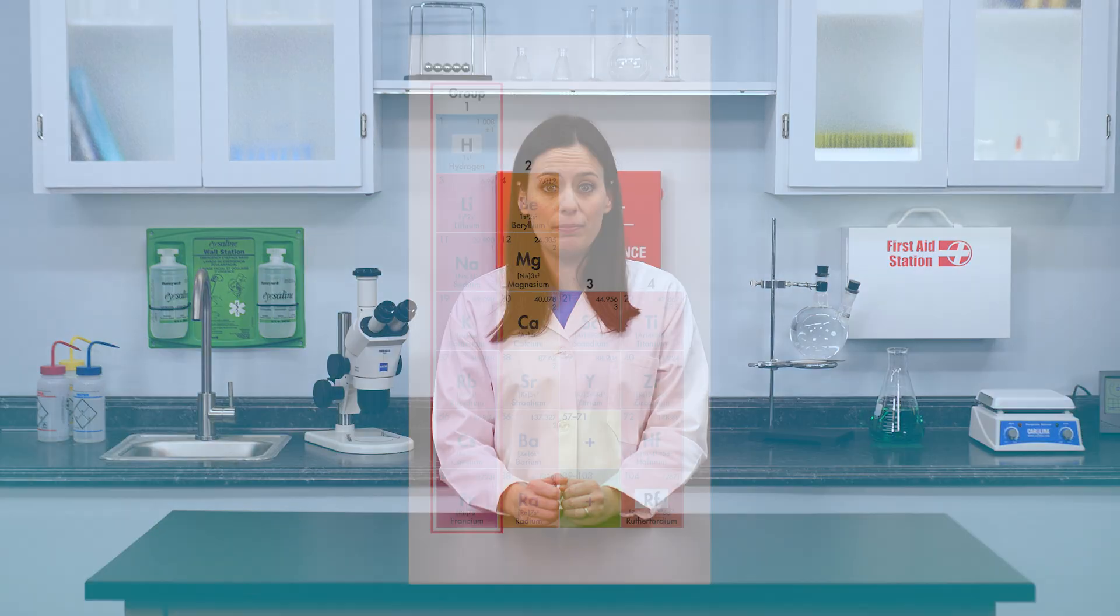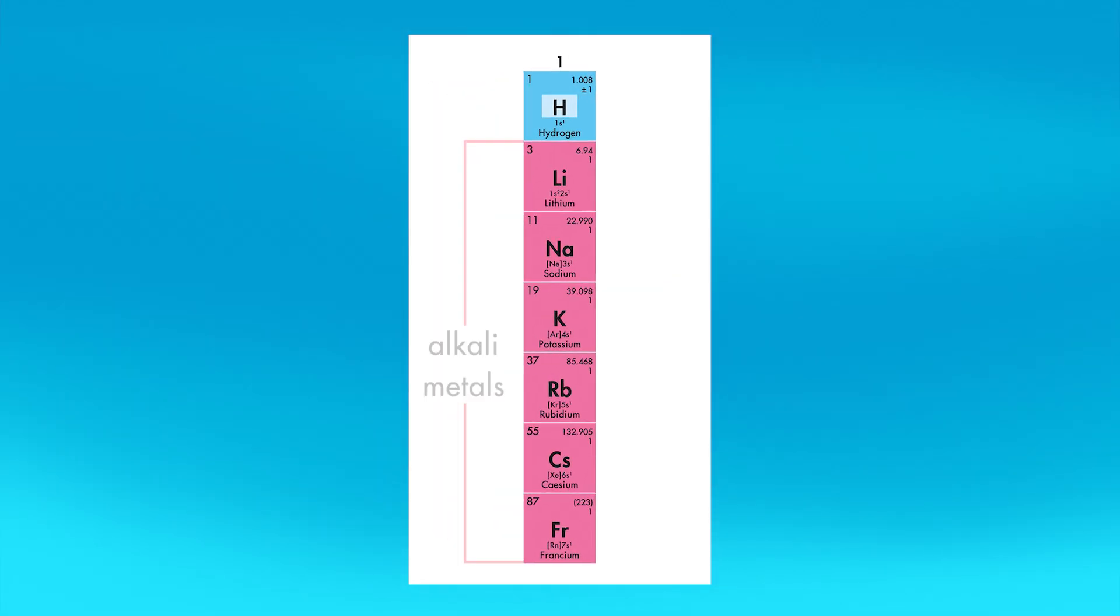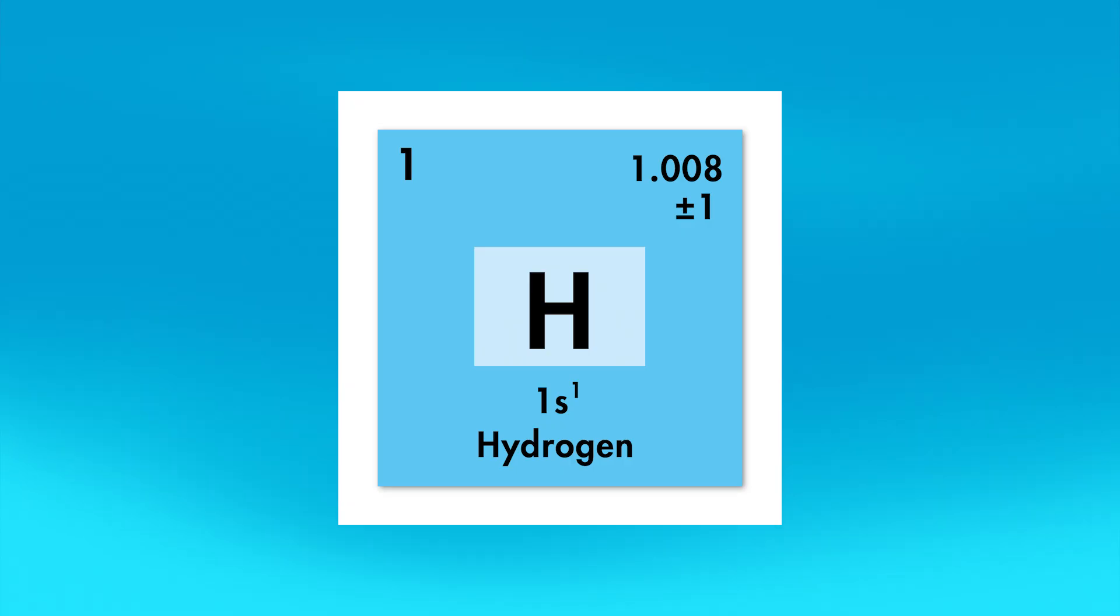As we stated earlier, hydrogen is the only nonmetal located on the left side of the periodic table. It sits at the top of group 1. All of the other members of group 1 are alkali metals. Even though hydrogen is a nonmetal, it is placed in group 1, because it has only 1 valence electron like the other members of this group.